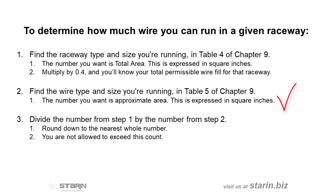Multiply that number by 0.4 and you'll know the total permissible wire fill for that raceway. Next, you'll need to know the diameter of the cable or wire that you're using. Find the diameter of wire you're running in Chapter 9, Table 5. The number you want here is approximate area, also expressed in square inches. Then divide the total permissible wire fill by the wire area and round down to the nearest whole number.